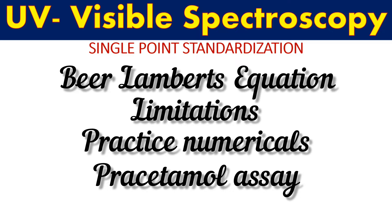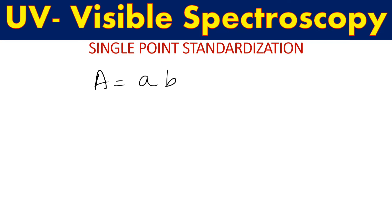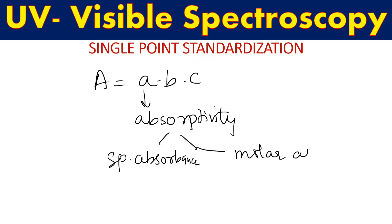When the standard absorptivity value is given, in Beer-Lambert's equation 'a' stands for absorptivity. This is just a repetition from the earlier video. We have specific absorbance and the second type of absorptivity is molar absorptivity, which we have seen earlier.